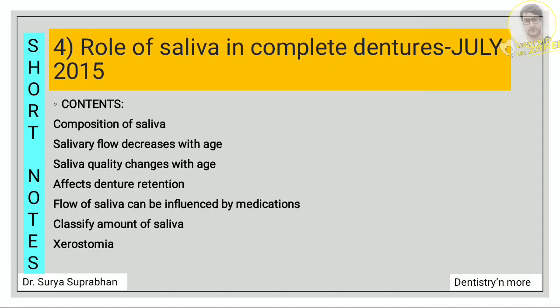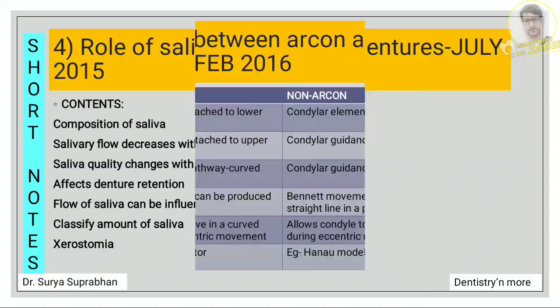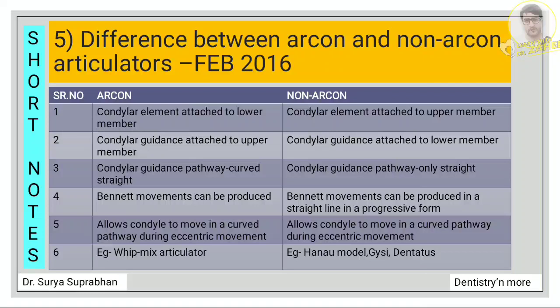The next question is the role of saliva in complete denture — a question you've been answering since second year of BDS. Write what is saliva, the composition of saliva, what happens when salivary flow decreases, how the quality of saliva changes with age, how it affects denture retention, and how salivary flow can be influenced by medications. Also classify the amount of saliva and mention xerostomia.